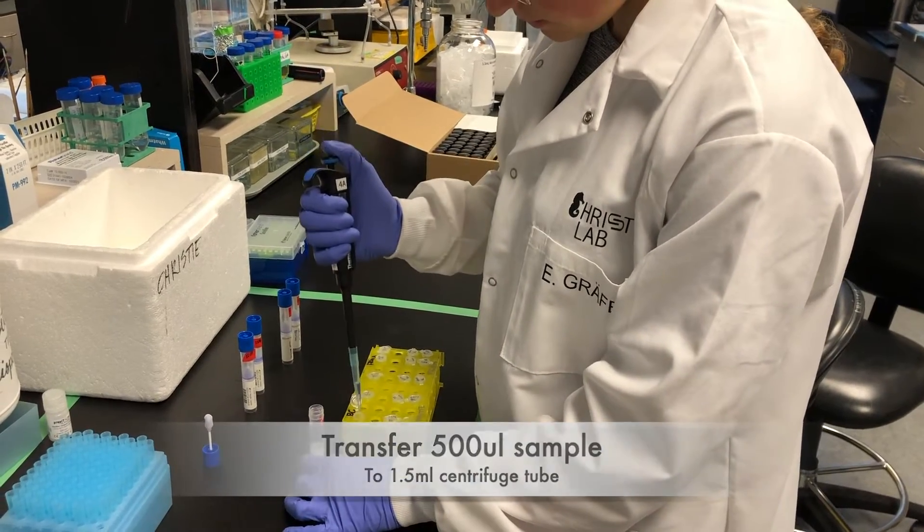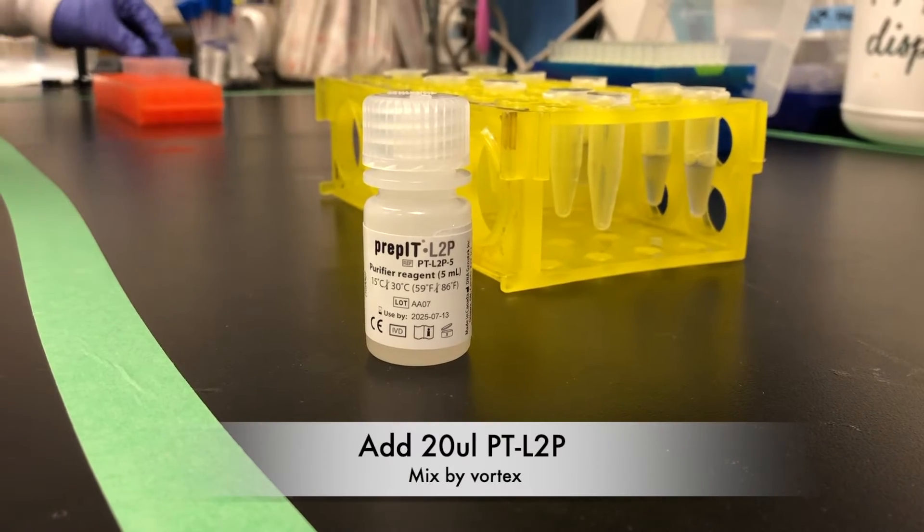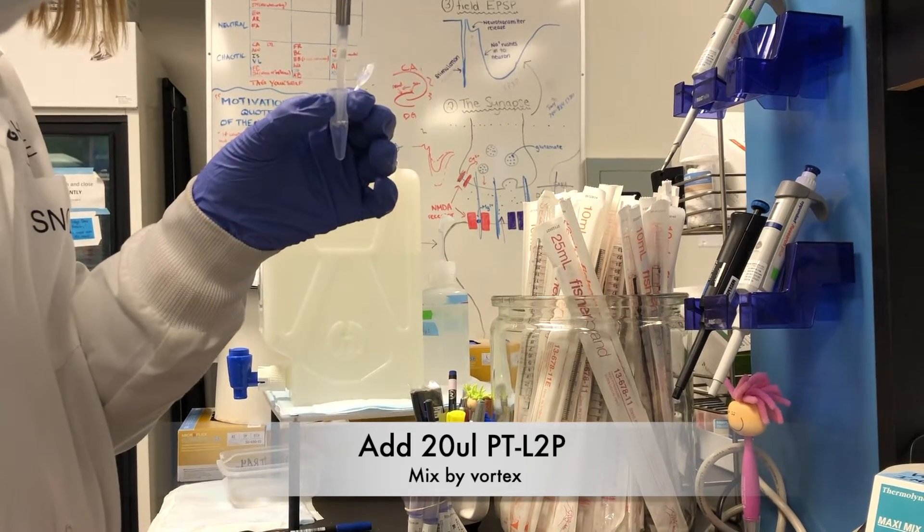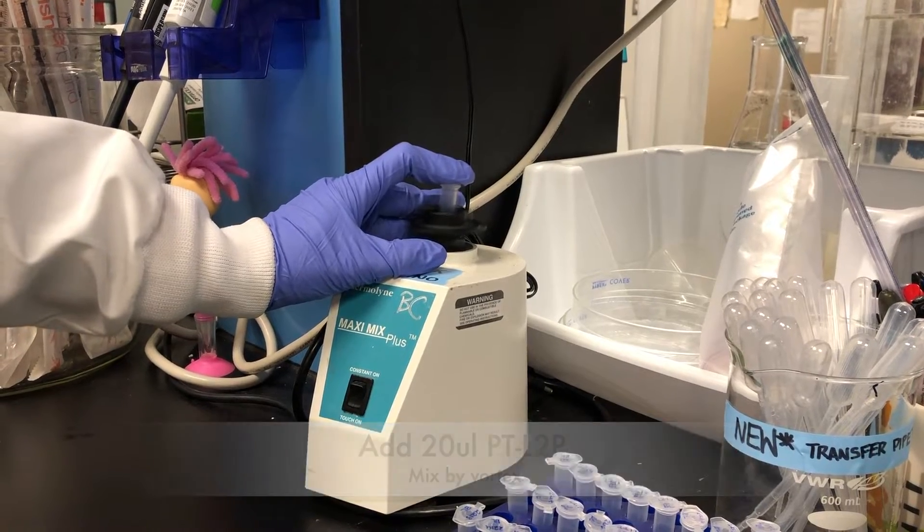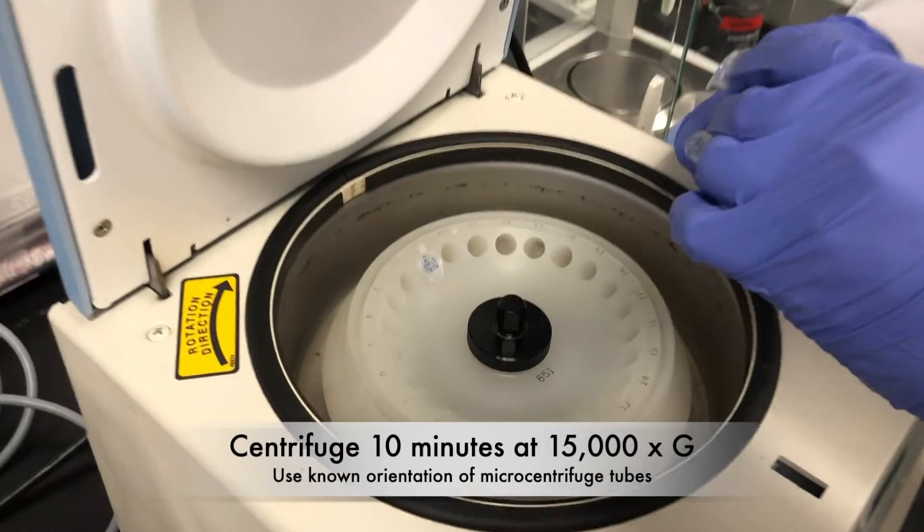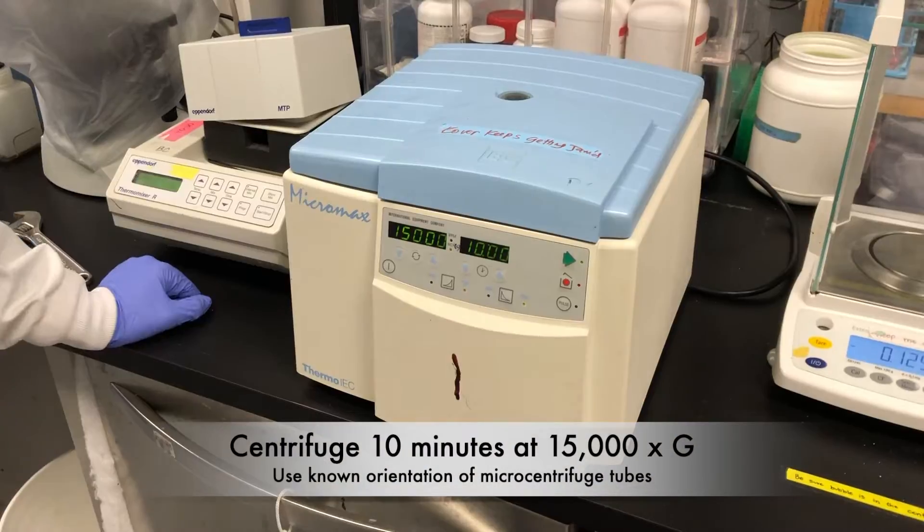Transfer 500 µL of sample into a microcentrifuge tube. Add 20 µL of prep L2P, mix by vortex. Incubate 10 minutes on ice, and place tubes in a known orientation in the centrifuge.